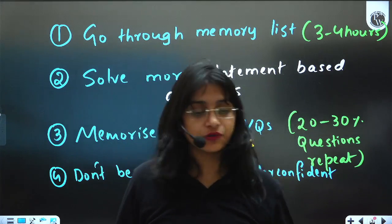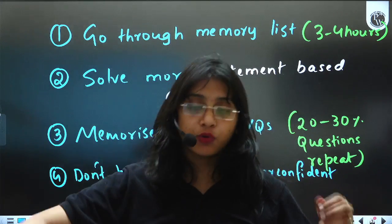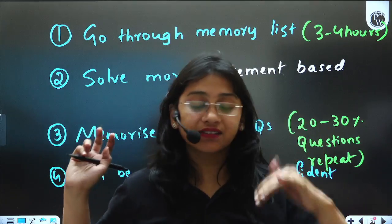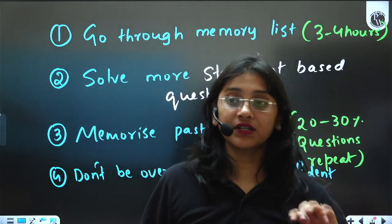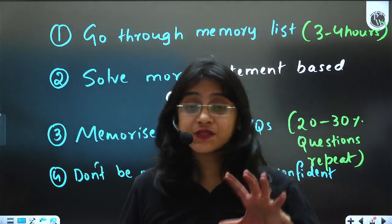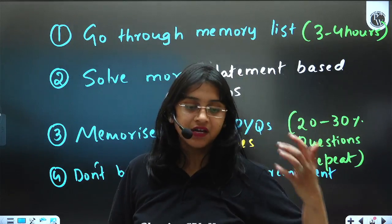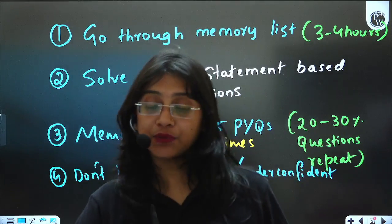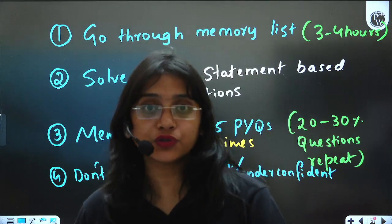Spend three to four hours just going through the memory lists that you have done: the examples of animal kingdom, the important examples of the plant kingdom, morphology of flowering plants. These memory-based things which you have written in your notes, you have to spend time to go through them so that every day if you go through this, you are able to retain all the information.